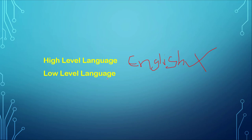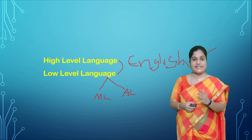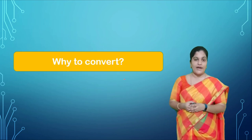Machines can understand only low level language, and this low level language is of two types: one is machine language and another one is assembly language. So we need a software which will act in between the high level language and low level language — here comes our compiler, which will convert a high level language to low level language.